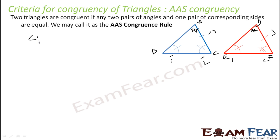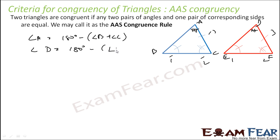Angle A is equal to 180 degrees minus angle D plus angle C, and angle B is 180 degrees minus angle D plus angle F. Since these are equal, angle D will be equal to angle A. All three angles are equal and this side is equal, so the triangles have to be congruent.